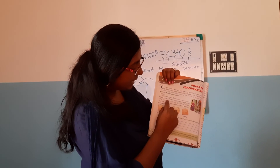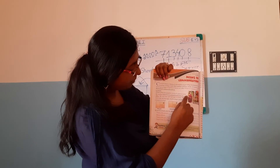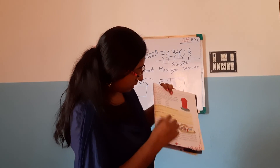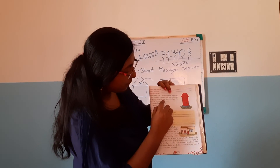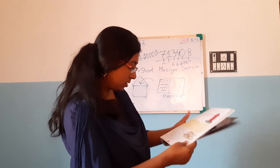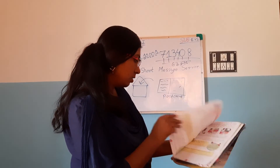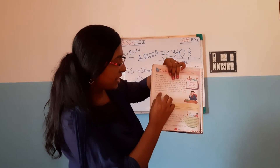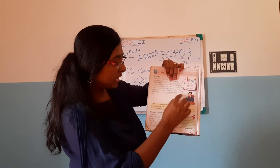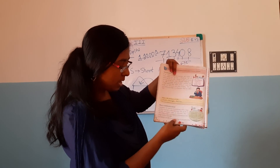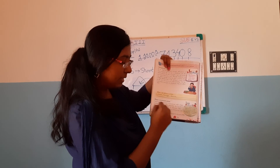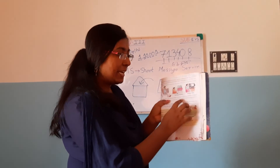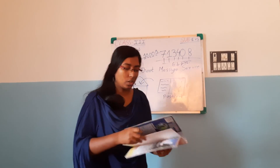We can buy inland letters and postcards from the post office. In our country, the PIN code has six digits. We can send written messages on cell phones — they are called SMS. Mass media can send messages to satellite. That's all. Thank you.